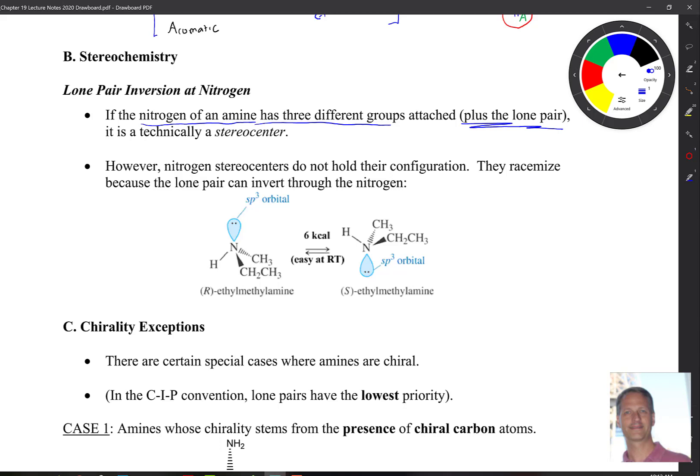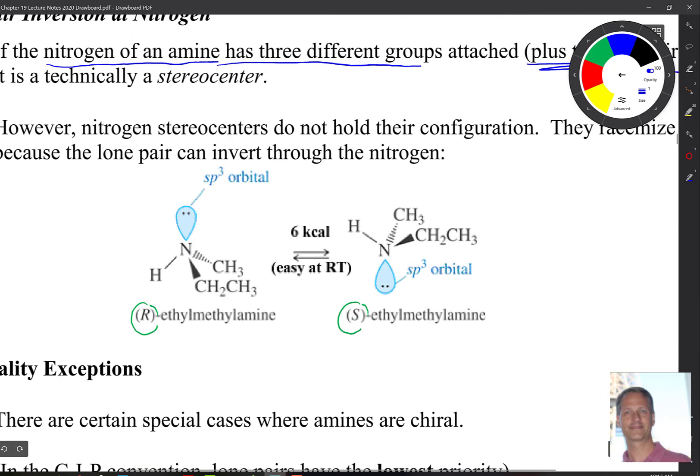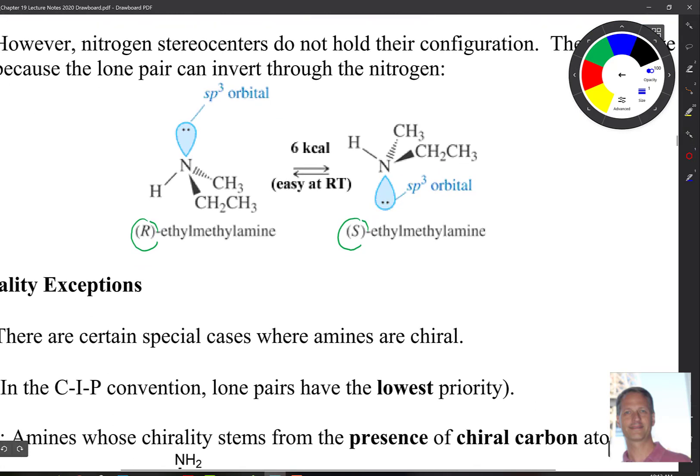It turns out that nitrogen does not retain its configuration. Our R stereoisomer is in equilibrium with S. What happens here is that the lone pair does something called nitrogen inversion. It's a process called quantum tunneling, where the electrons go through the nucleus and pop out on the other side of the nitrogen atom. You go through this transition state. This happens hundreds of times per second with six kcals per mole at room temperature.